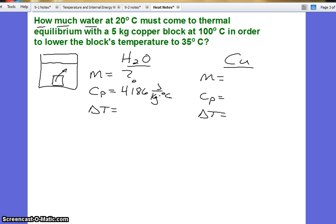For the temperature change, everything always reaches the same final temperature. We say that everything comes to thermal equilibrium. So the water starts at 20, and it comes to a final temperature of 35. So it has increased, meaning positive, 15 degrees Celsius.